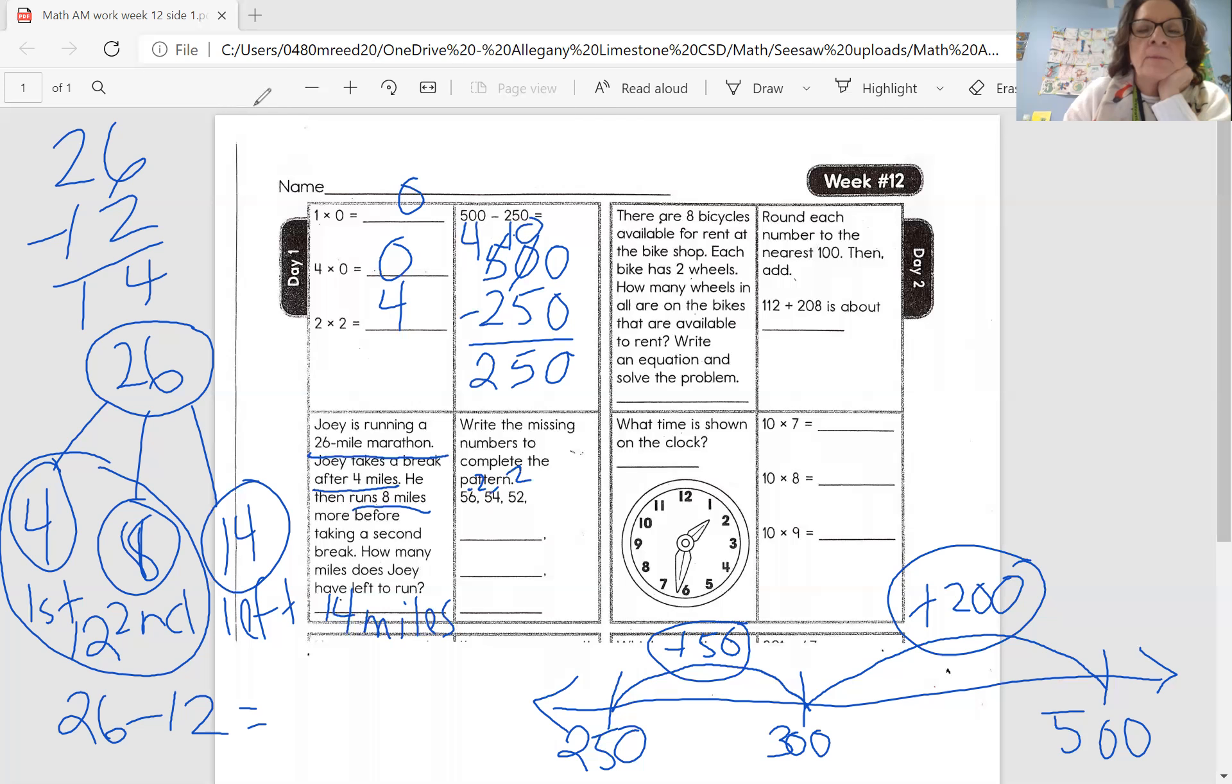I'm going to write that here, minus two. 56 minus two gives me 54. 54 minus two gives me 52. 52 minus two gives me 50. 50 minus two gives me 48, and 48 minus two gives me 46. There's your pattern, subtracting two every time. I hope you found that helpful. Have a great day, and we will see you later.